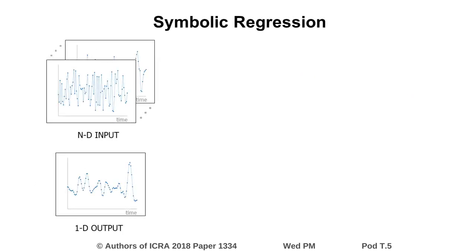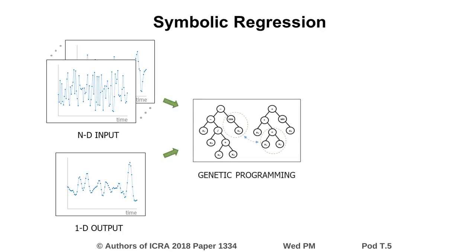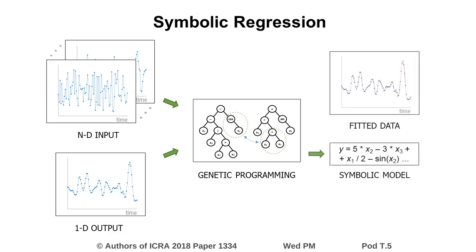Symbolic regression estimates the state transition function of the system. Given a set of training samples consisting of multi-dimensional inputs with known outputs, genetic programming is used to form a model composed of features represented as trees. The functions used in the inner nodes of the trees, their depth, and the number of features are parameters that are set by the user.